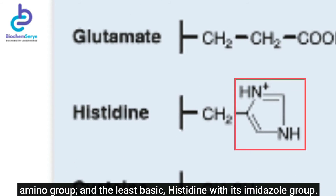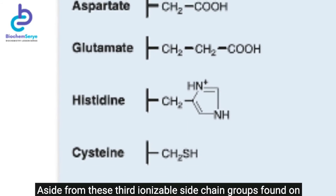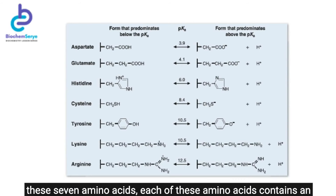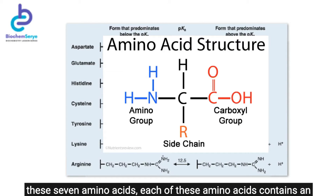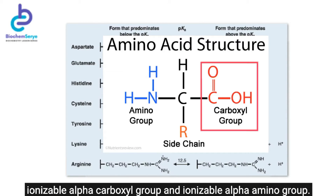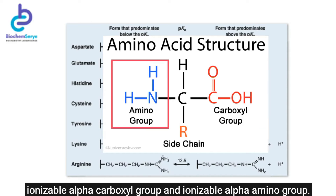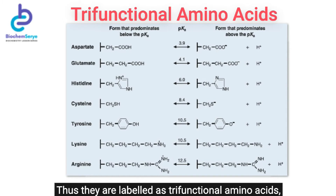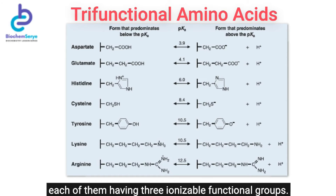Histidine has an imidazole group as its third ionizable side chain. Aside from these third ionizable side-chain groups, each of these seven amino acids also contains an ionizable alpha-carboxyl group and an ionizable alpha-amino group. Thus they are labeled as trifunctional amino acids, each having three ionizable functional groups.